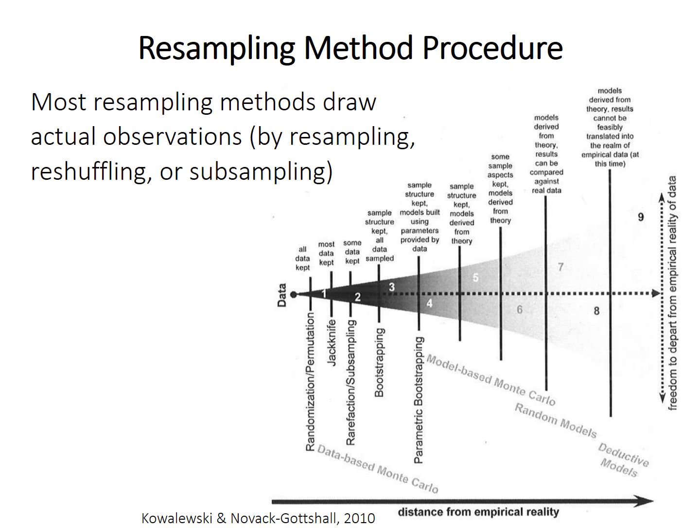So first a bit of terminology. The names given to these different techniques are really not used that consistently in the literature, but I'll stick with this framework here for terminology in this video. So in general, resampling methods use repeated draws from the actual data. So it either reshuffles them, or resamples them, or it also can subsample them.